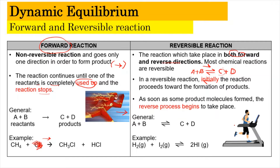You can imagine it like someone on a treadmill — the person is moving forward, but there's a belt that allows the person to move backwards. At equilibrium, the person remains stationary, and we know it stays at equilibrium because the rate of the forward reaction is the same as the reverse reaction.